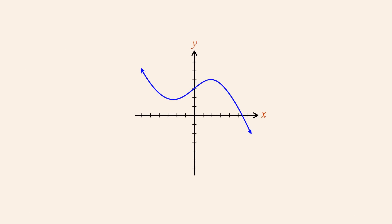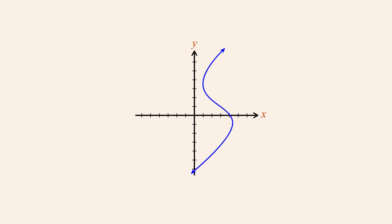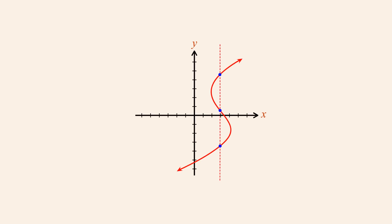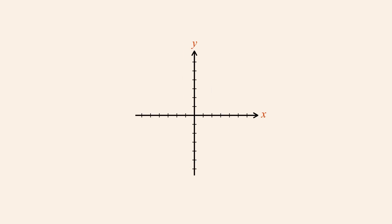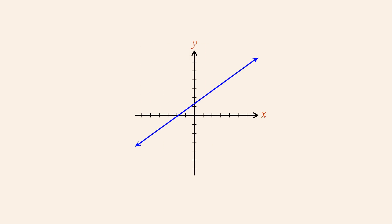So this curve represents a function. However, the same curve rotated by 90 degrees fails the vertical line test. Therefore, it does not represent a function. Any linear graph represents a function unless the line is vertical.